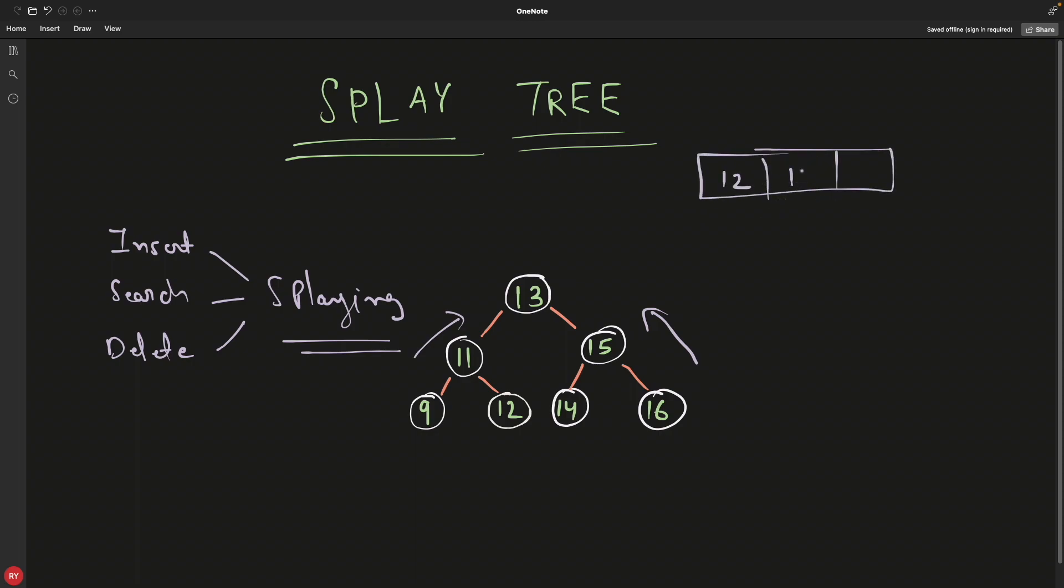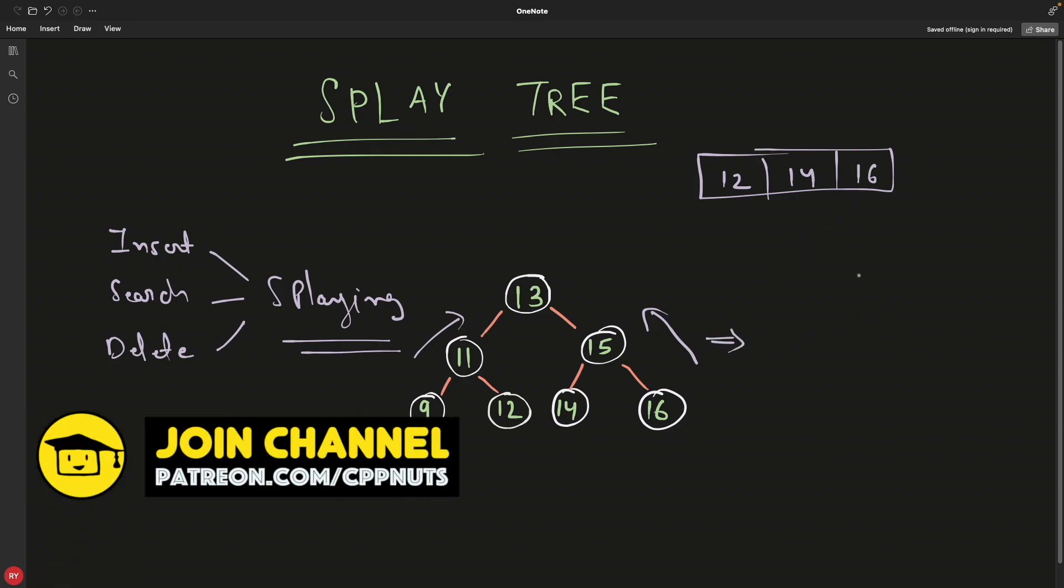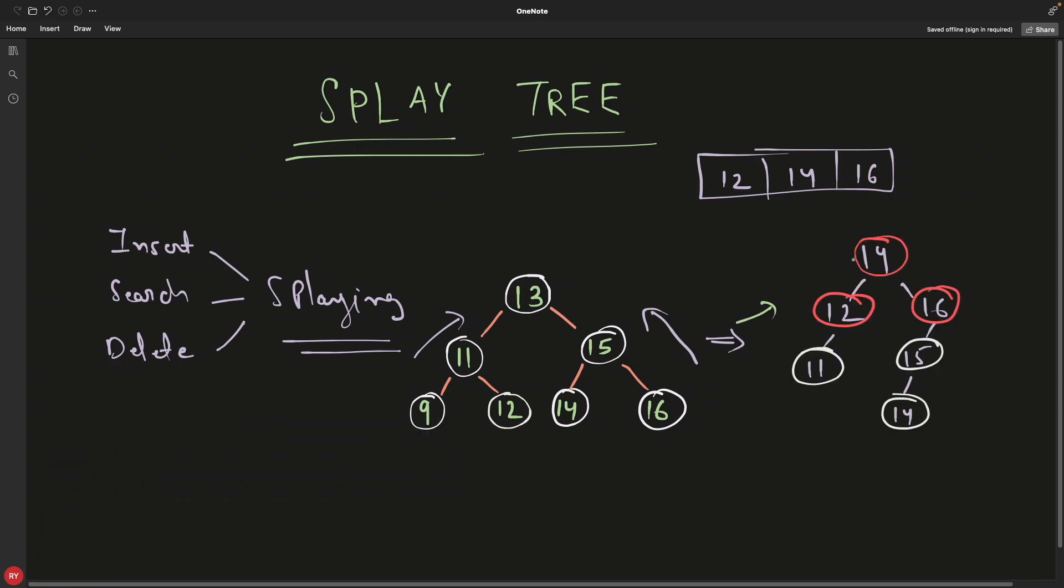If I want to search maybe three elements like 12, 14, and 16, then this tree may look something like this. Don't look at the order like what did I search first. The point is, 12, 14, and 16 were actually lying in the leaf nodes, but after searching, the tree would look something like this. These three elements were actually lying in the bottom, but now after performing a search operation they started coming on the top, towards the root.